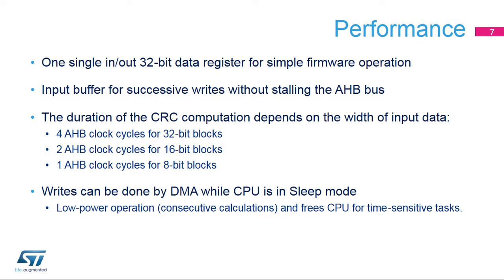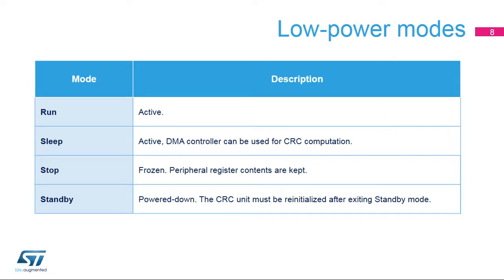The DMA controller can be used for writing to the CRC engine. This offloads the CPU for other tasks and can be used for back-to-back calculations for verifying code or data integrity. This slide summarizes the power modes in which the CRC calculation unit is available. The CRC calculation unit needs the main AHB clock to operate.